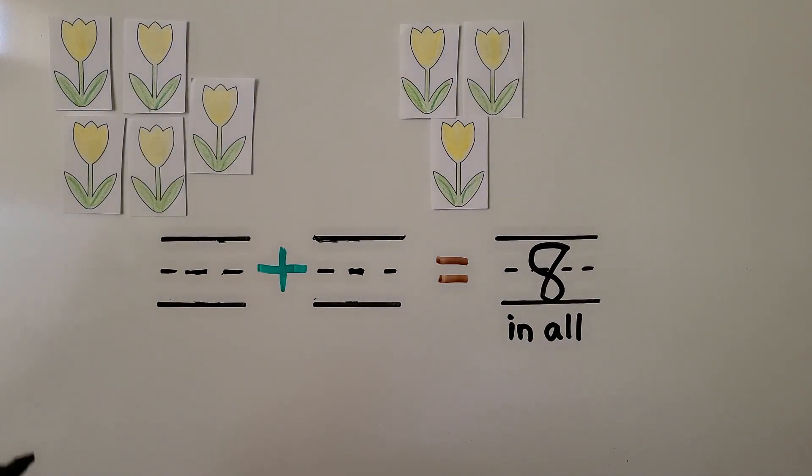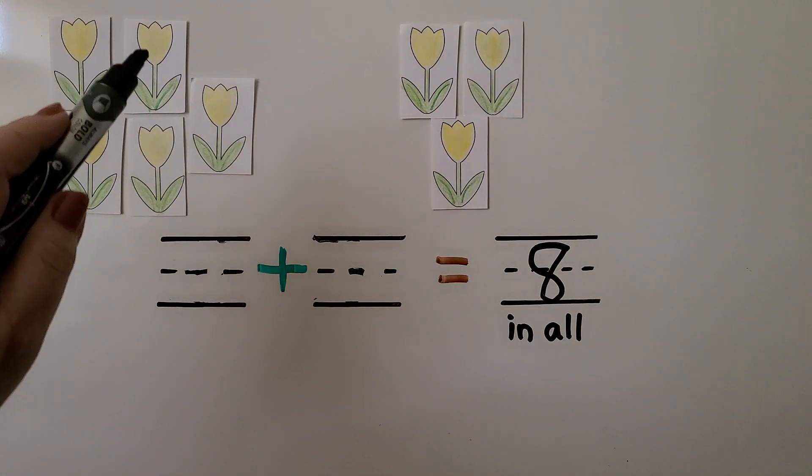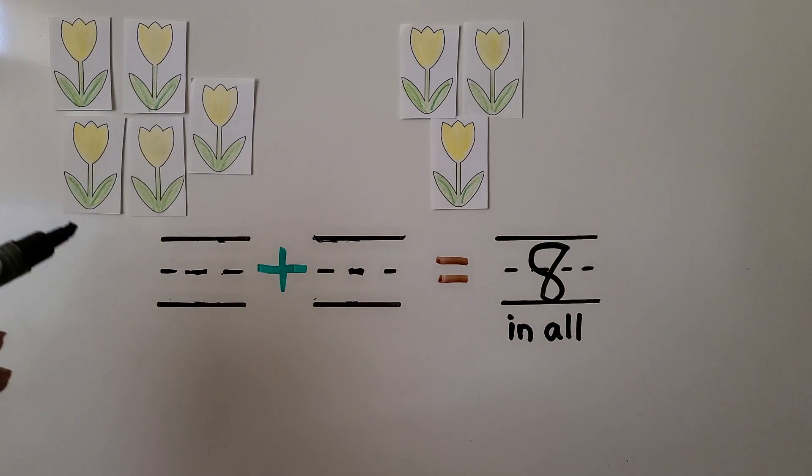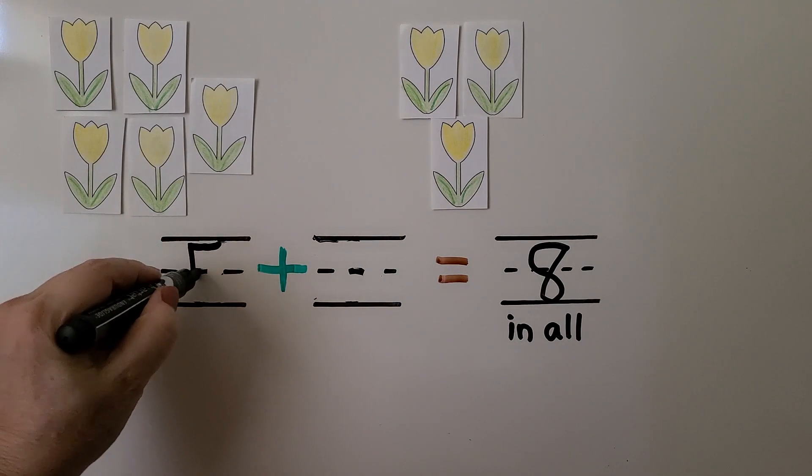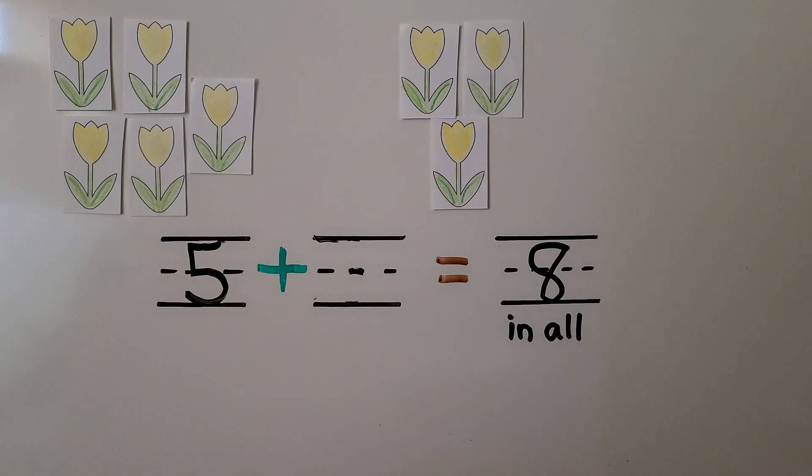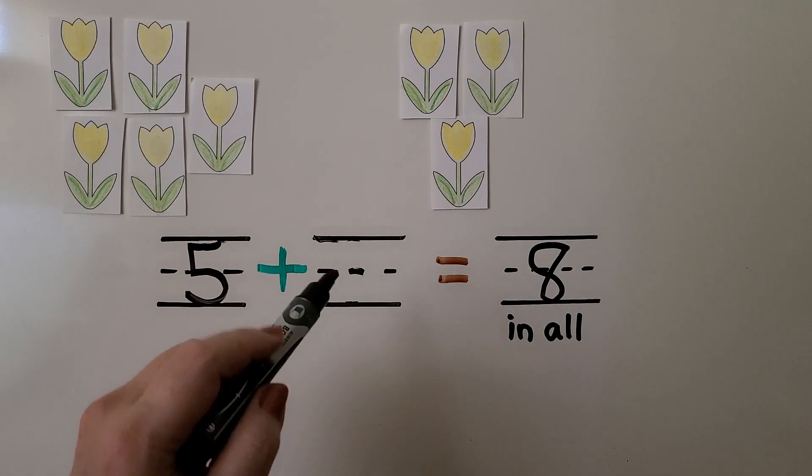He had five. One, two, three, four, five. We can write the five that he had at first. He planted more flowers. We can circle the flowers he planted.